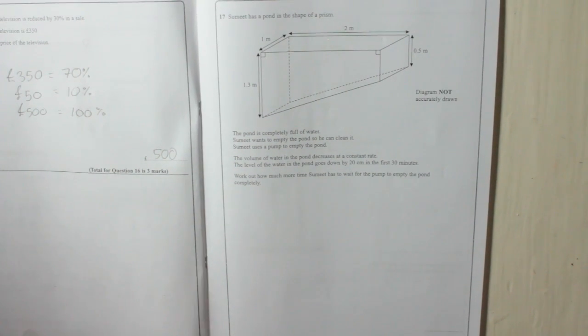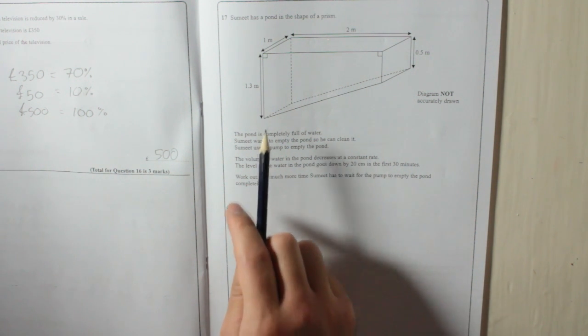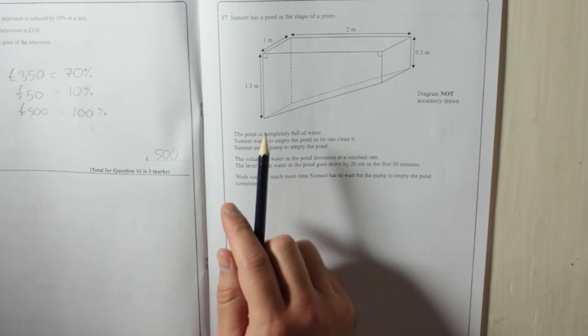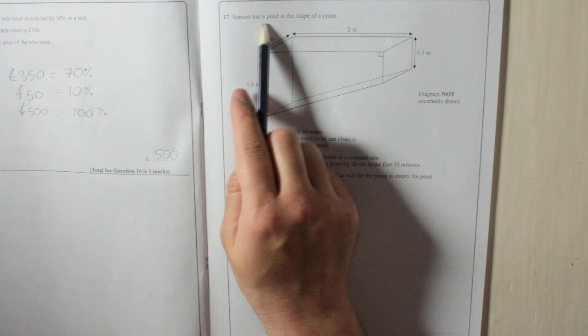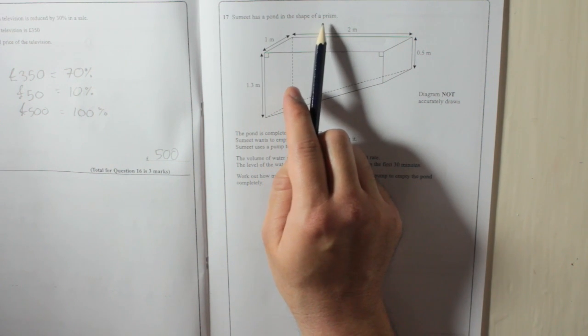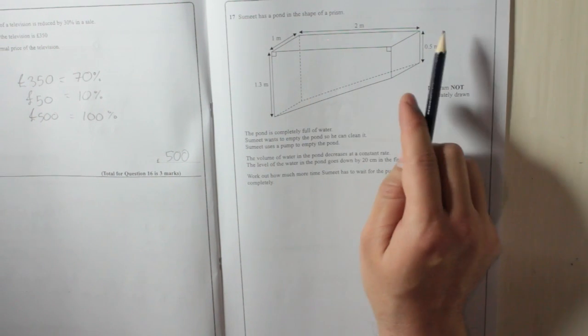Question 17, probably the first really annoying question with a lot of working out. And the one where you need one of the formulas from the start of the test. Summit has a pond in the shape of a prism. What's that mean? It means it's got the same shape going all the way through it.